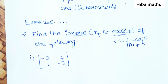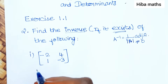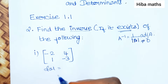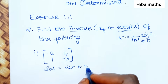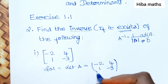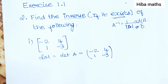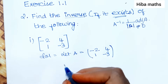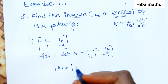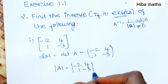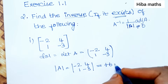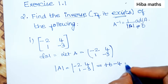First, the 2 by 2 matrix: let A equal to [-2, 4; 1, -3]. Solution: first, we solve the modulus of A. The modulus of A equals (-2)(-3) minus (4)(1), that is 6 minus 4, minus 4, which equals 2.